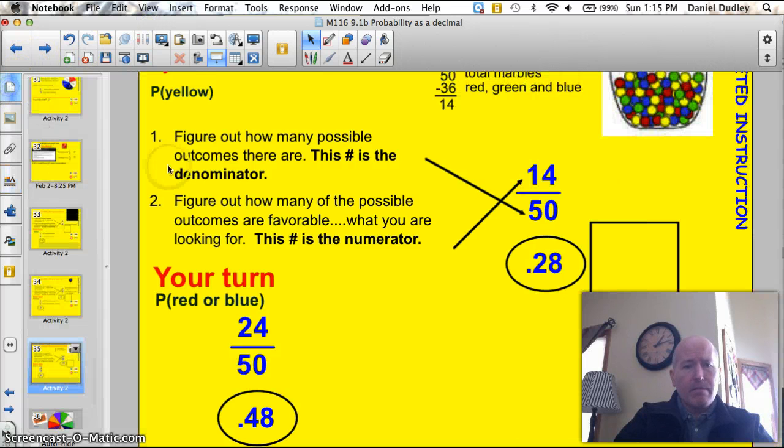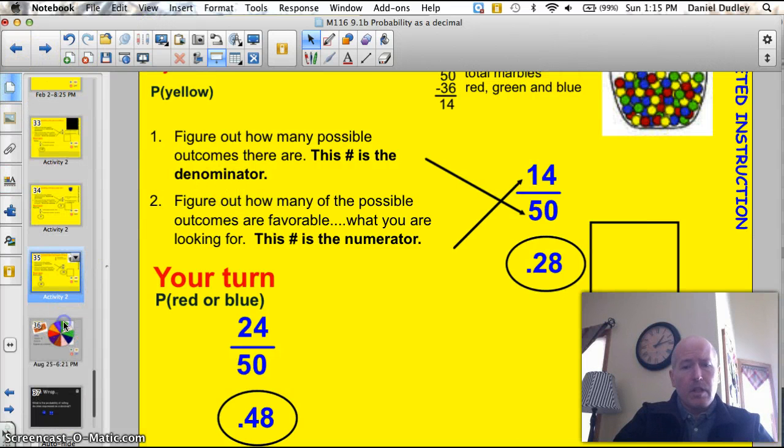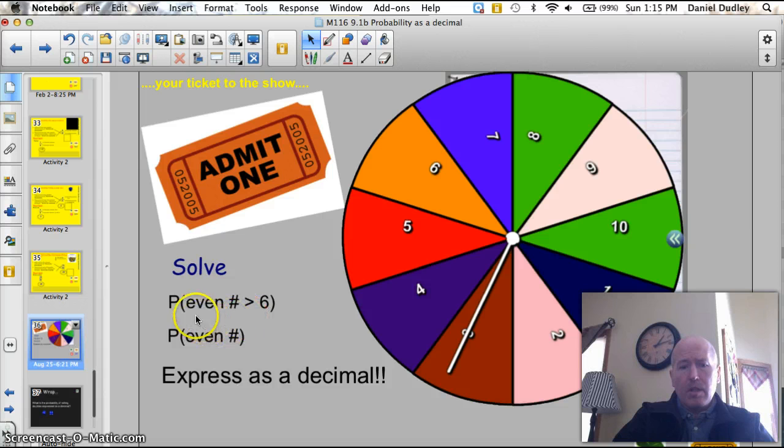Time for the ticket to the show. Very similar to last night, but I did change it. Here's the spinner. What is the probability of getting an even number that is greater than 6? Kind of tricky. An even number greater than 6. There's a total of 10 on here. And then, the second problem. What is the probability of just getting an even number? Don't forget. Express your answer as a decimal. I'll give you a second to look at that.